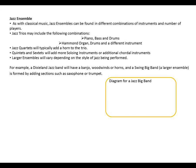Then we have the jazz ensemble. As with classical music, jazz ensembles can be found in different combinations of instruments and a number of players. Jazz trios may include piano, bass and drums. Jazz quartets will typically add a horn to the trio. Quintets and sextets will add more soloing instruments or additional chordal instruments. Large ensembles will vary depending on the style of jazz being performed. For example, a Dixieland jazz band will have a banjo, woodwinds or horns. And a swing big band, a larger ensemble, is formed by adding sections such as the saxophone or trumpet.